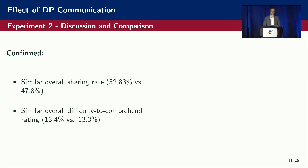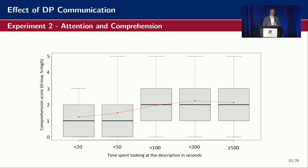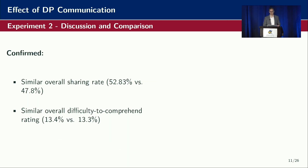What could we confirm? We had a very similar overall sharing rate compared to the original study — roughly 50% of participants wanted to share data under differential privacy. We also had a similar overall difficulty-to-comprehend rate: around 13% indicated they found it hard to understand differential privacy. Which, if you remember the comprehension scores — they were wrong about that.